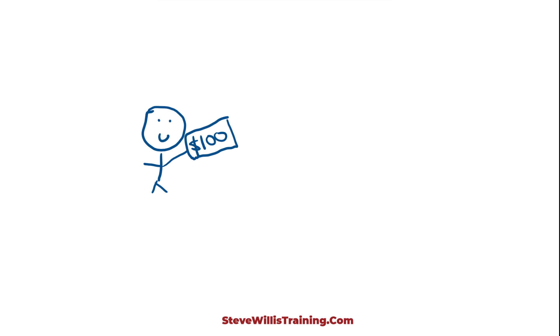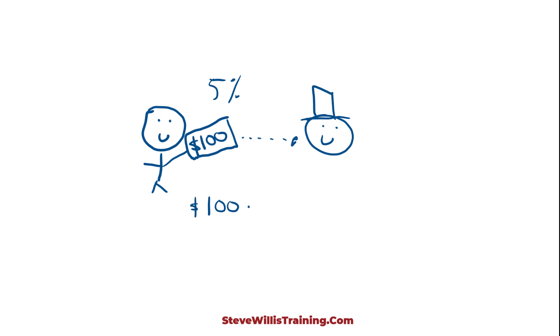Imagine I am going to loan someone $100 for one year. I am going to charge interest of 5%. At the end of the year, I will receive $100 multiplied by 1 plus the rate, 1.05, equals $105.